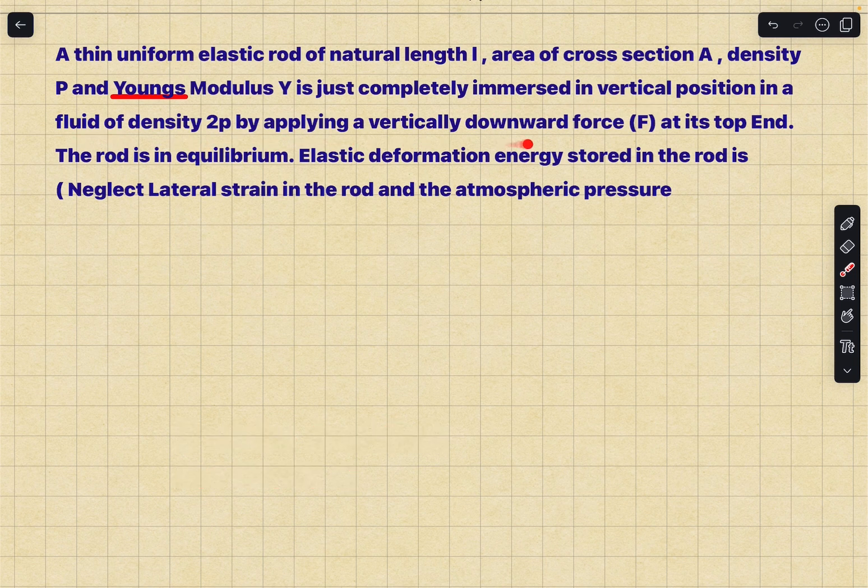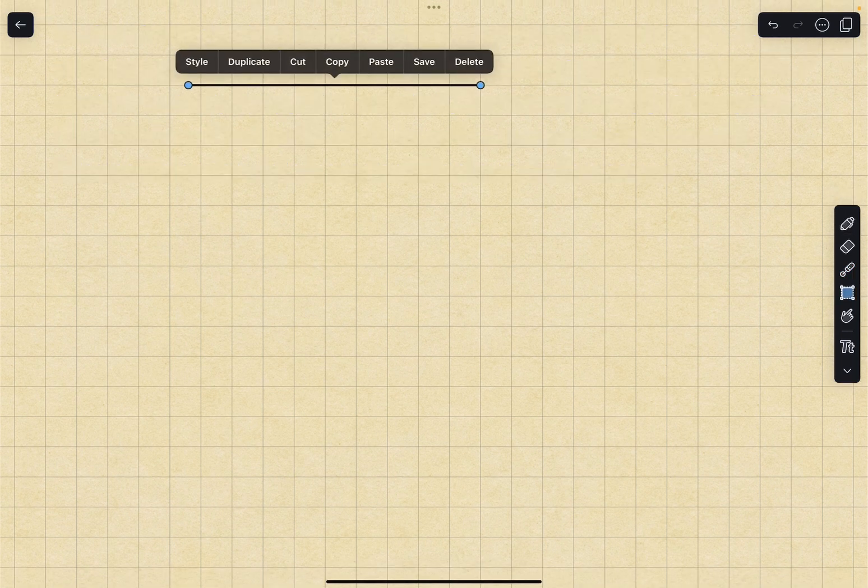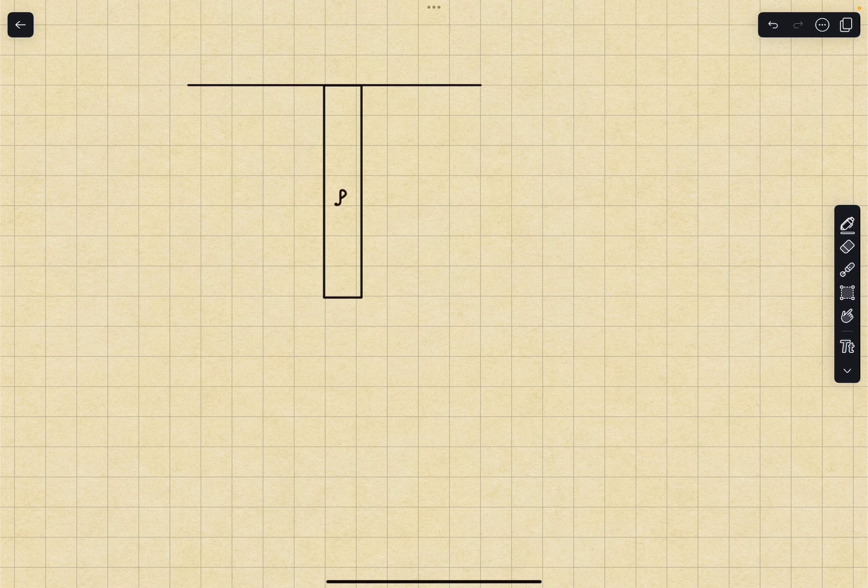The rod is completely immersed in a vertical position in a fluid of density 2 rho by applying a vertical downward force F at its top end. The rod is in equilibrium. We have to find the elastic deformation energy stored in the rod. Two important assumptions are given which I'll explain a bit later. First let's draw a diagram. If this is a fluid surface, the rod is completely immersed. The density of the rod is rho and the surrounding fluid has a density of 2 rho and we are applying an axial force F.